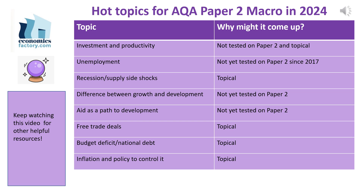Also look at trade deals, because in the wake of Brexit the UK has been trying to negotiate new trade deals with other countries. The prospects for those deals and their possible economic effects are exam-relevant — for example, the UK would love to reach a trade deal with the USA, and that would be something that could be looked at in an exam question.